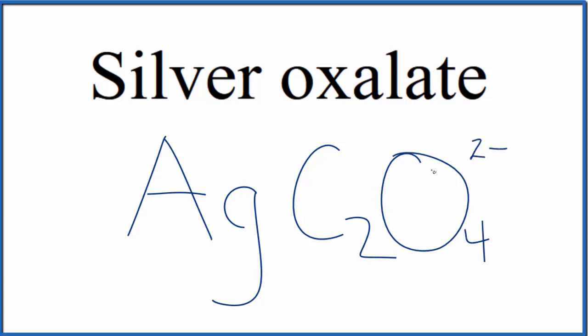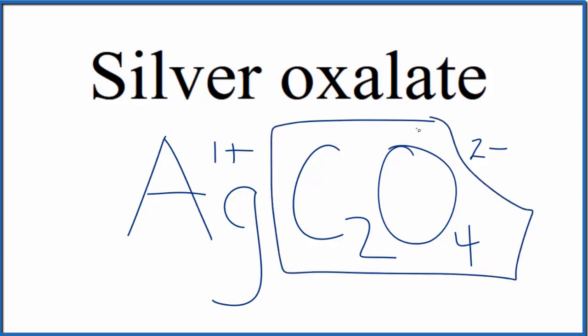So silver is a transition metal, and this oxalate is a group of nonmetals. So we need to think about the charge when we write the name. Silver is almost always 1 plus, and the whole oxalate ion here is 2 minus. So we're going to need 2 of these silver ions to balance the charge here.